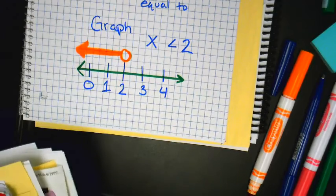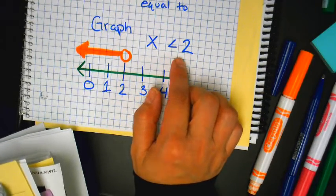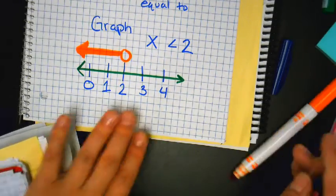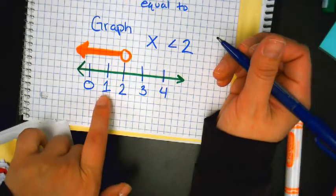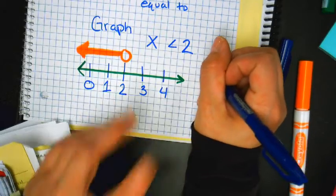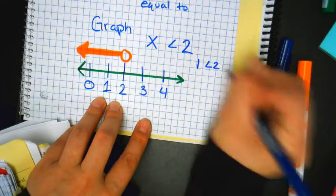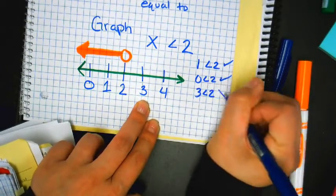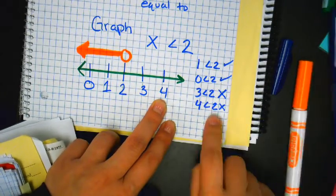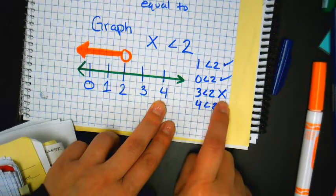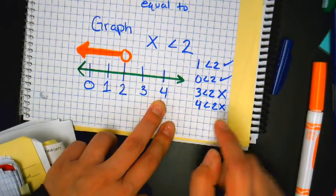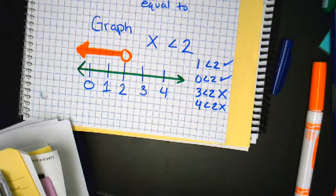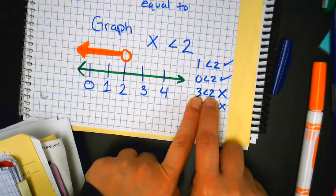We're going to shade to the left, because these are the numbers that are possible solutions for my inequality. I'm looking for numbers that are less than 2, and there's an infinite number of them. Is 1 less than 2? Yes. Is 0 less than 2? Yes. Is 3 less than 2? No. Is 4 less than 2? No. The alligator is eating the bigger number on the shaded side — that's why we shade in this direction.